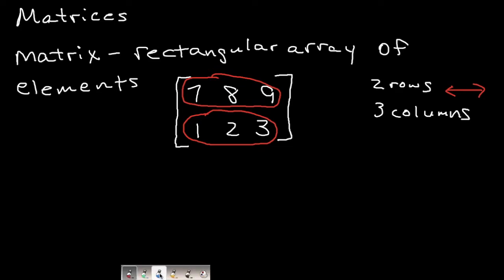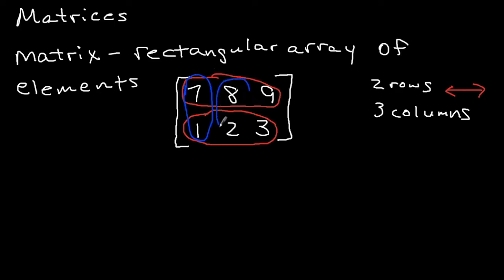Now I'm going to change my color to blue and circle all the columns. So this is going to be the first column: seven, one. This is going to be the second column: eight, two. And this is going to be the third column: nine, three. Columns are always going to go from up to down — so these are vertical.